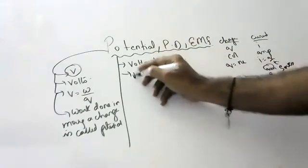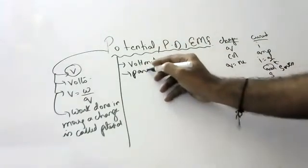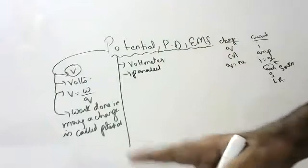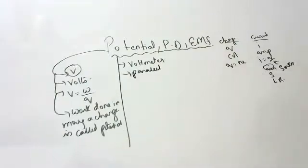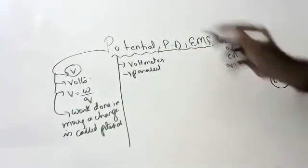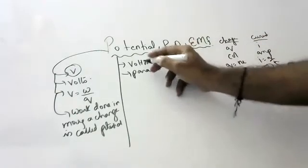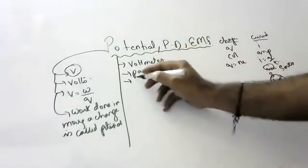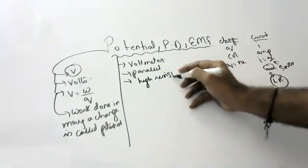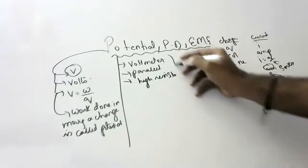Ammeter is connected in series because it has low resistance. Voltmeter is connected in parallel because it has high resistance. This is a one-mark or two-mark question that they ask many times in exams.